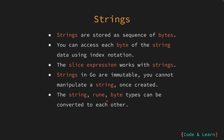Go allows you to convert between different types as long as the types are compatible. In Go, you can convert a string to a slice of bytes or runes, or vice versa. Runes, as we covered earlier, are used to represent Unicode characters. These concepts are fundamental when working with strings in the Go programming language.